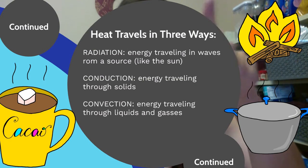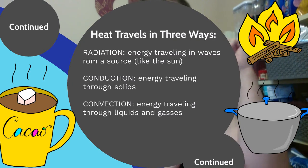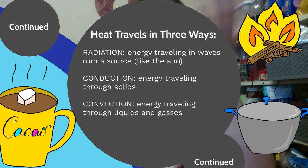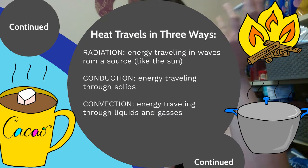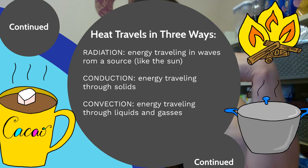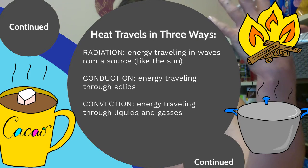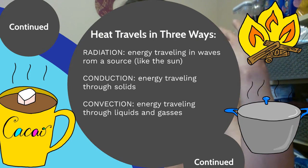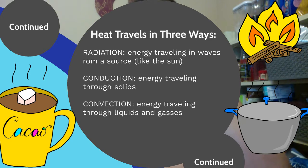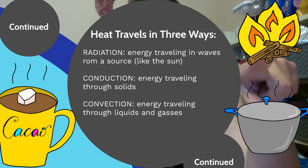The first is called radiation. All of these involve heat, but radiation is the kind where energy is traveling in waves from a source like the sun or a campfire, like in the picture shown here.